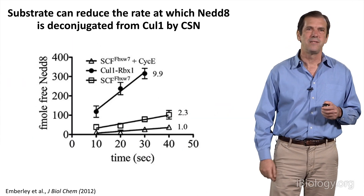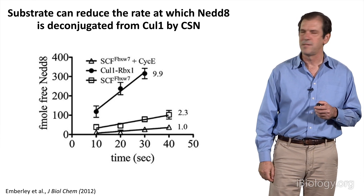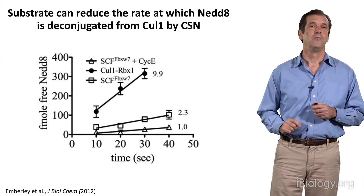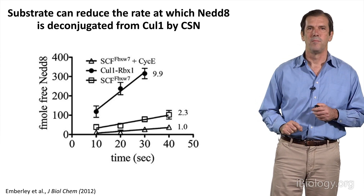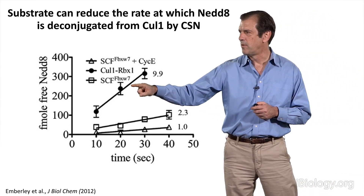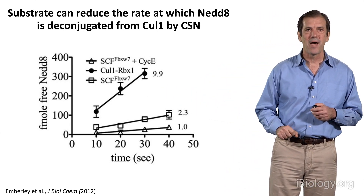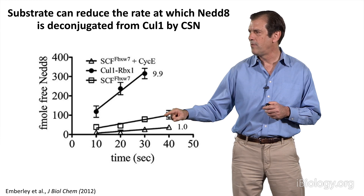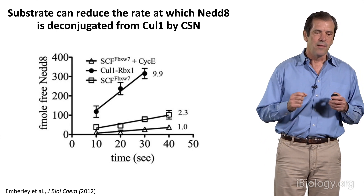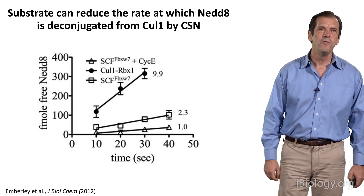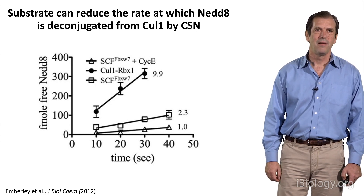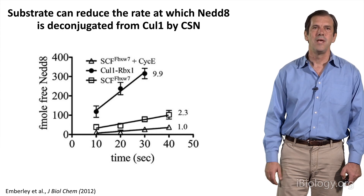The idea is that substrate would prevent the removal of NEDD8 and hold the enzyme in the active state. To test this, we did a biochemical experiment with purified CUL1 carrying NEDD8 and purified COP9 signalosome. We measured the rate at which NEDD8 is removed. When we add an F-box protein, that rate slows down, and when we add substrate for the F-box protein, it slows down even further. So the ability of COP9 signalosome to remove NEDD8 is intimately connected to the assembly state of the neddylated cullin, with substrate inhibiting that process.